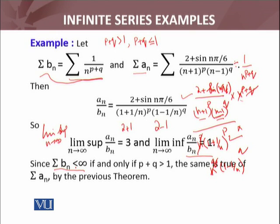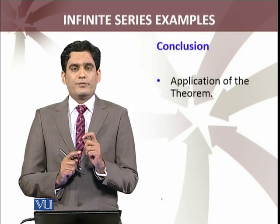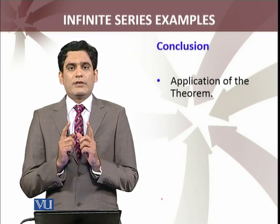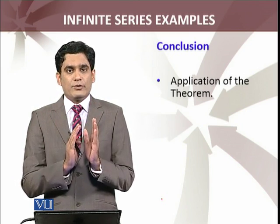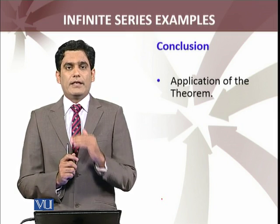Since summation bₙ is convergent when p+q > 1, and the limit superior of aₙ/bₙ is 3, which is a finite number, by the theorem the same convergence is true for summation aₙ. Similarly, since the limit inferior is 1 > 0, this series will diverge whenever p+q ≤ 1. So we have successfully applied the theorem to this particular example. Without this theorem, checking convergence or divergence of the series involving (2 + sin(nπ/x)) / ((n+1)ᵖ(n−1)ᵍ) would be quite a difficult task.